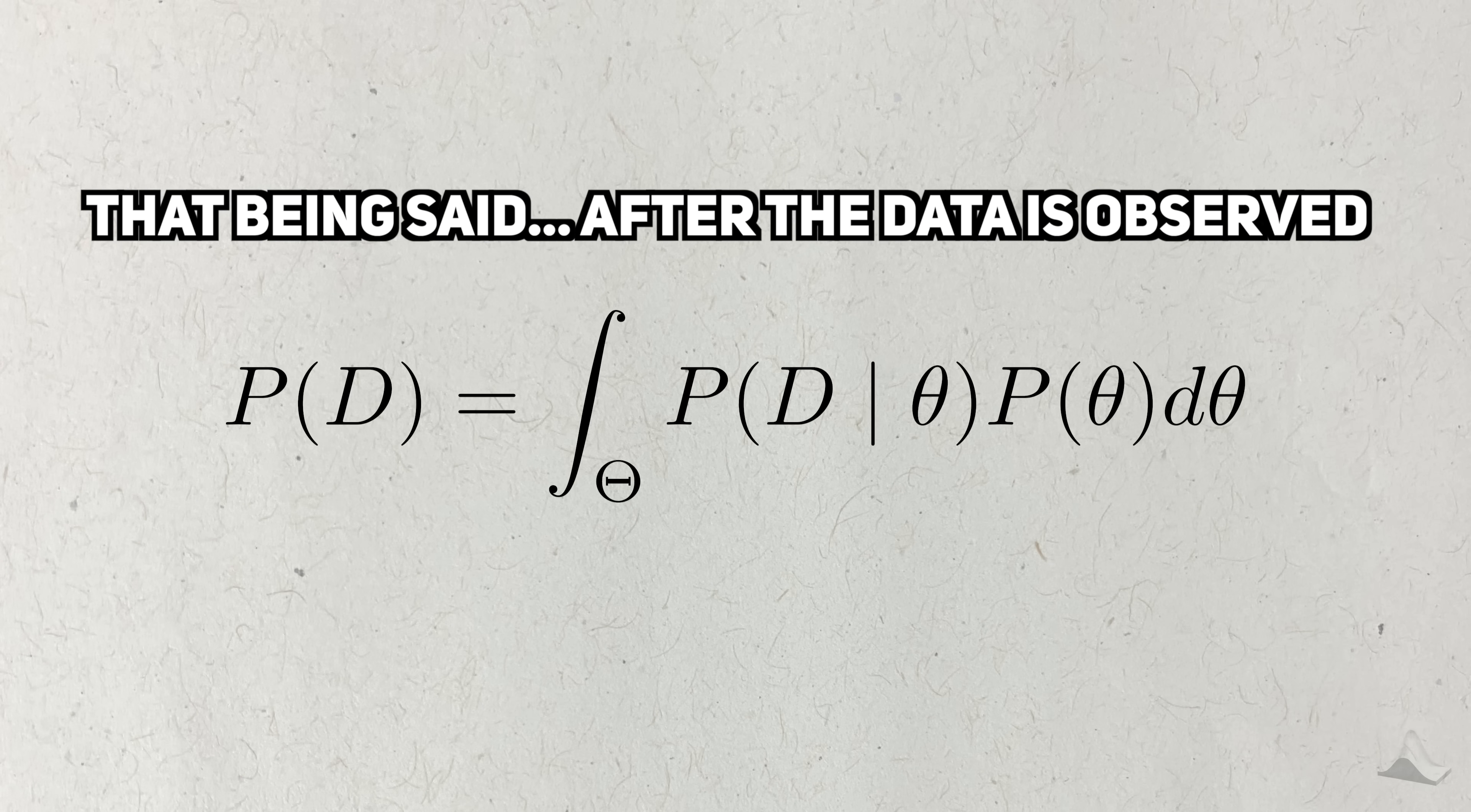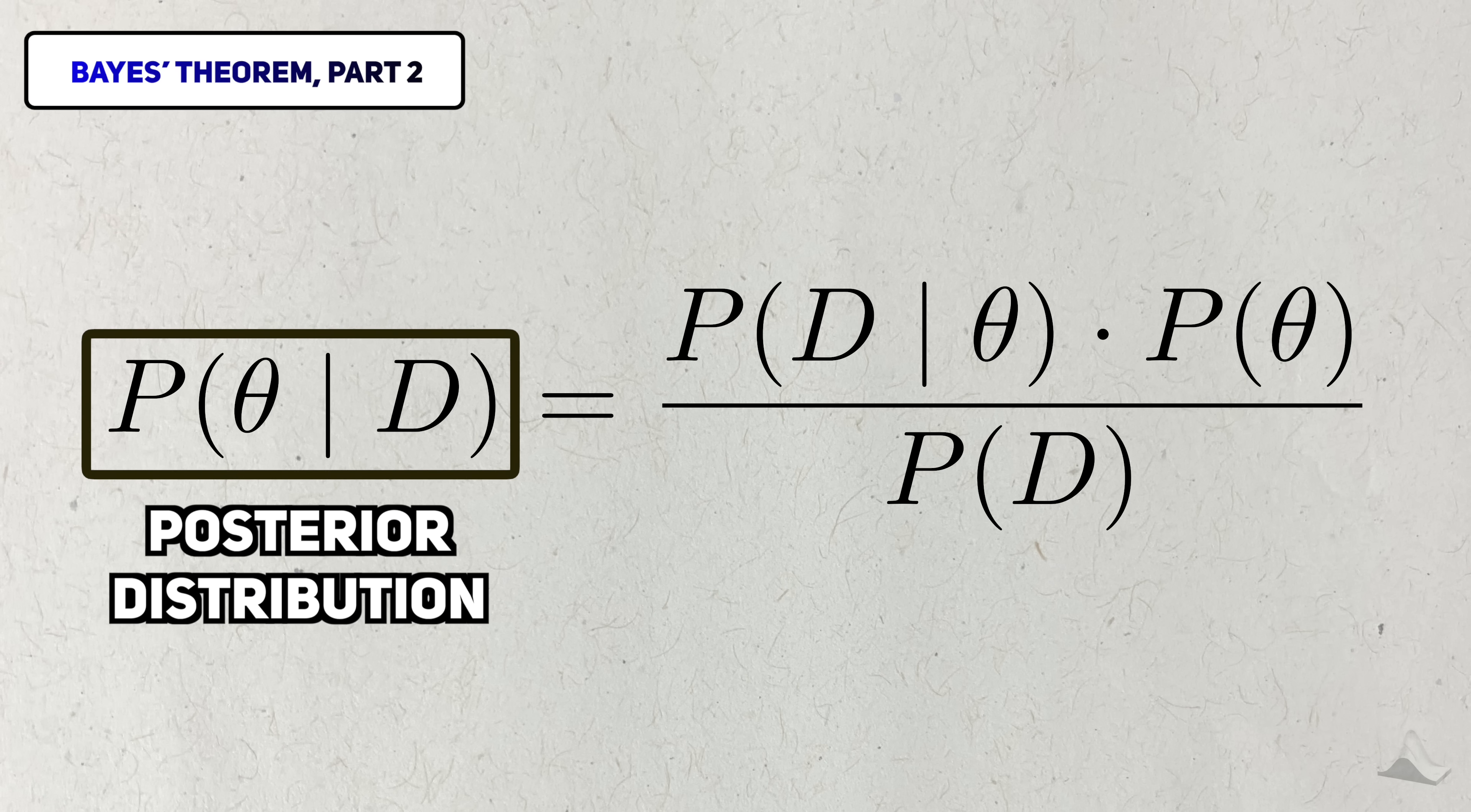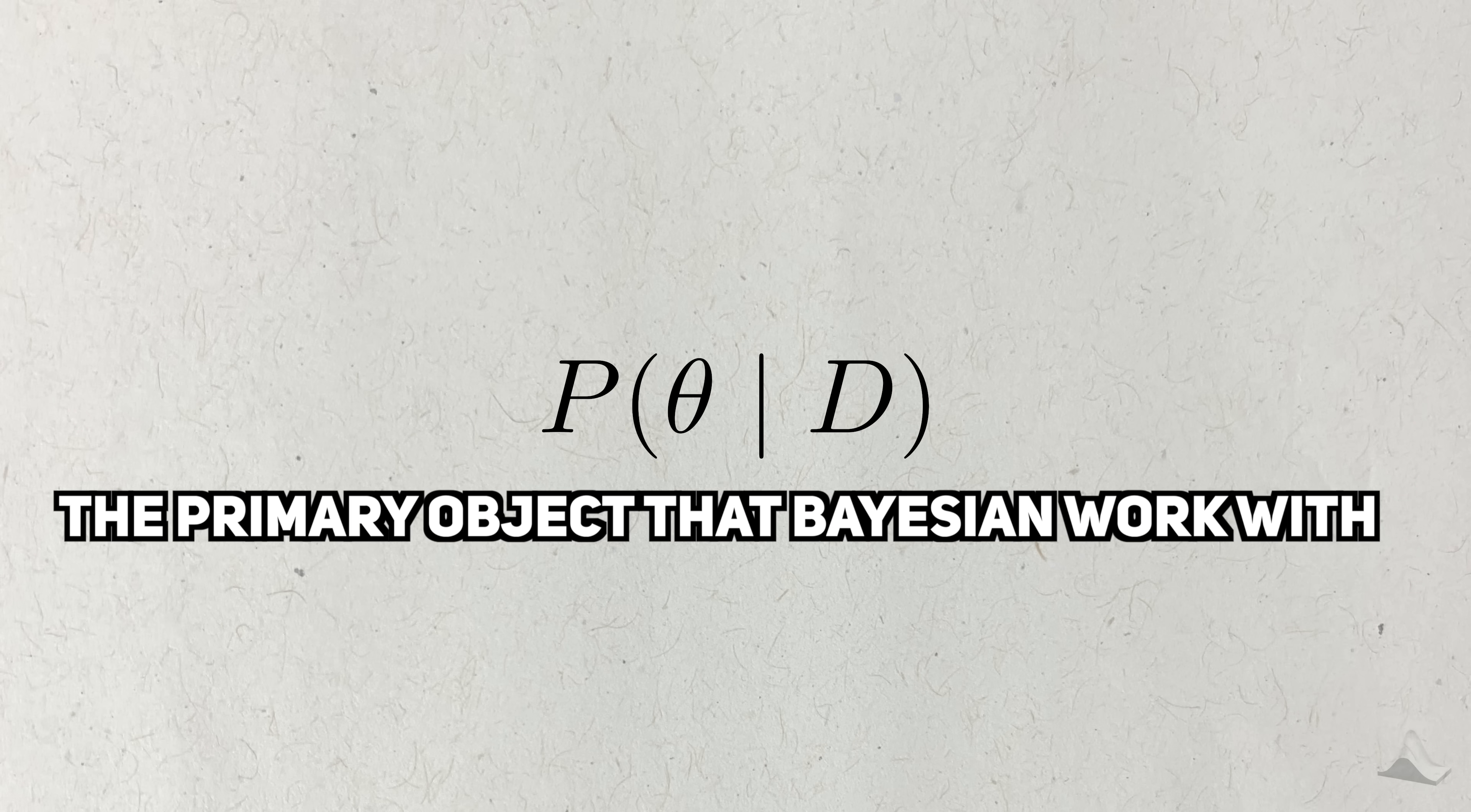A difficult-to-calculate number, but still a number. Once you perform all this theoretical computation, you finally get the posterior distribution, which represents your updated belief about the likely and unlikely values of the parameter after observing the data. The posterior distribution is the primary object that Bayesian statisticians interact with.